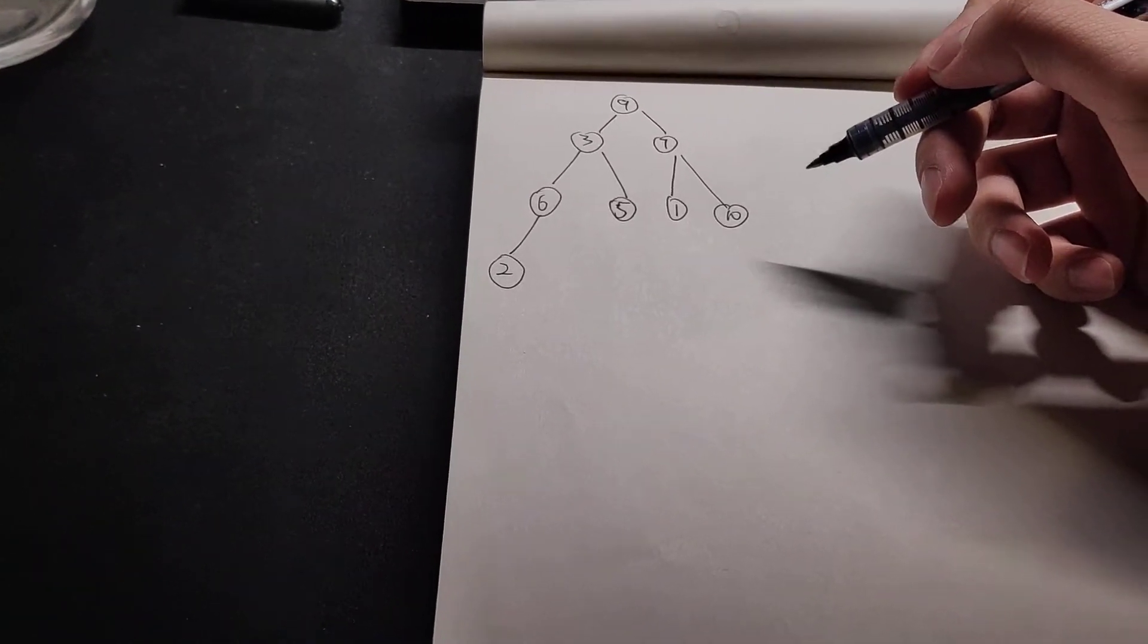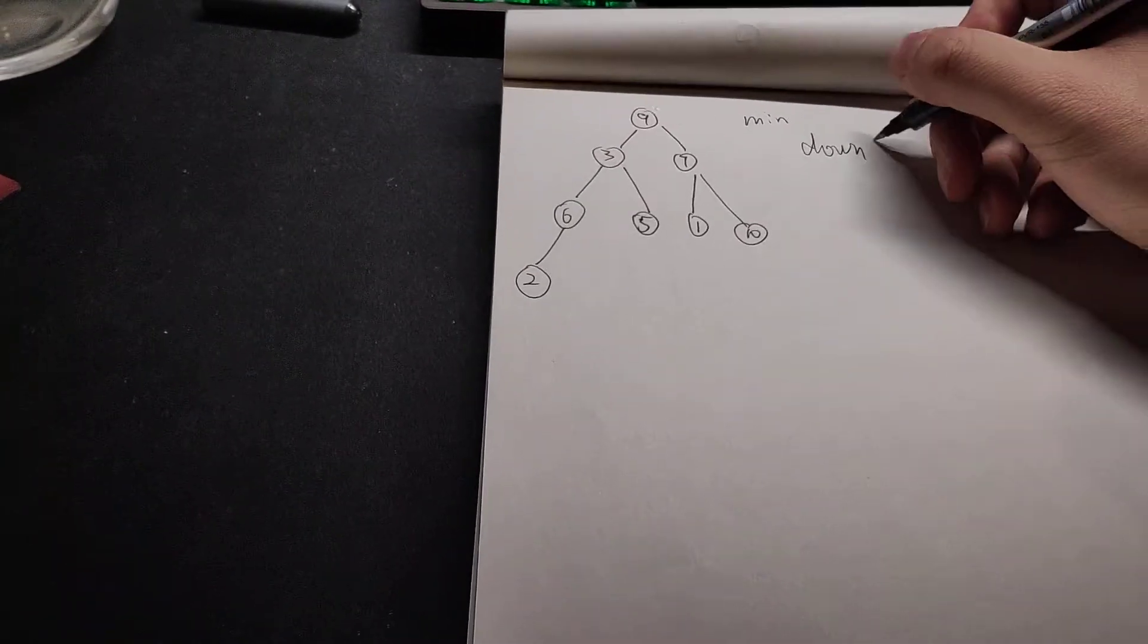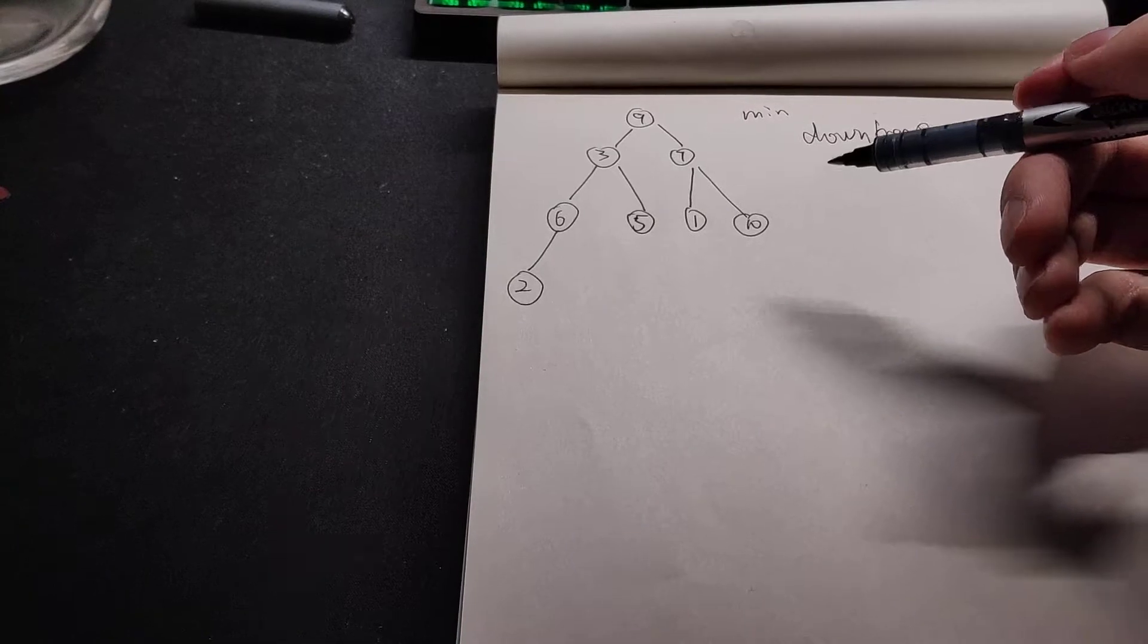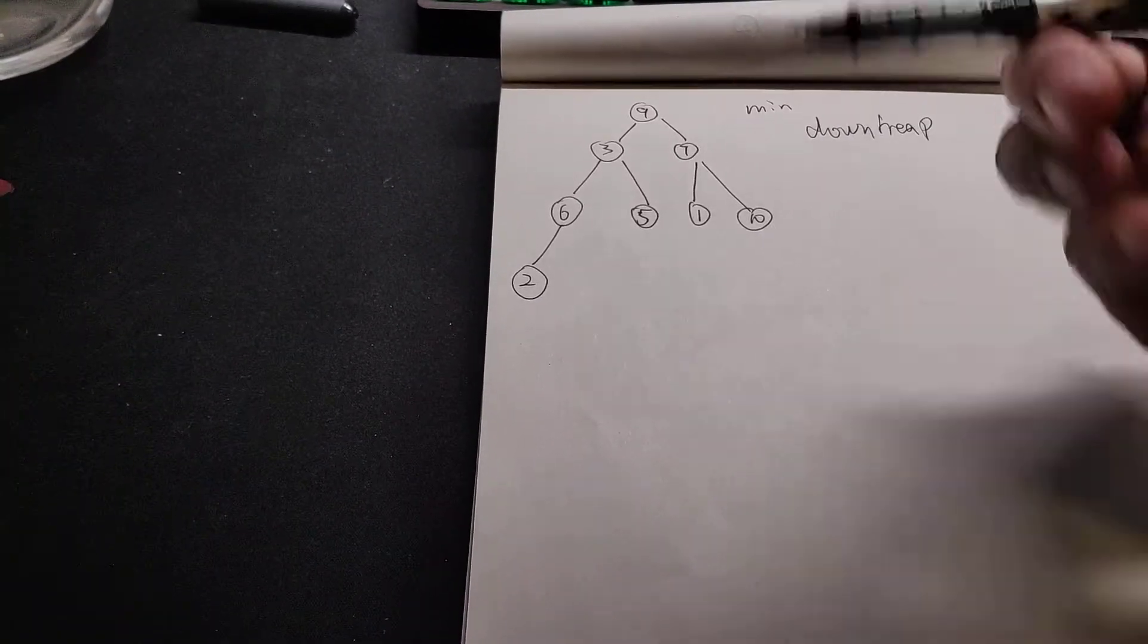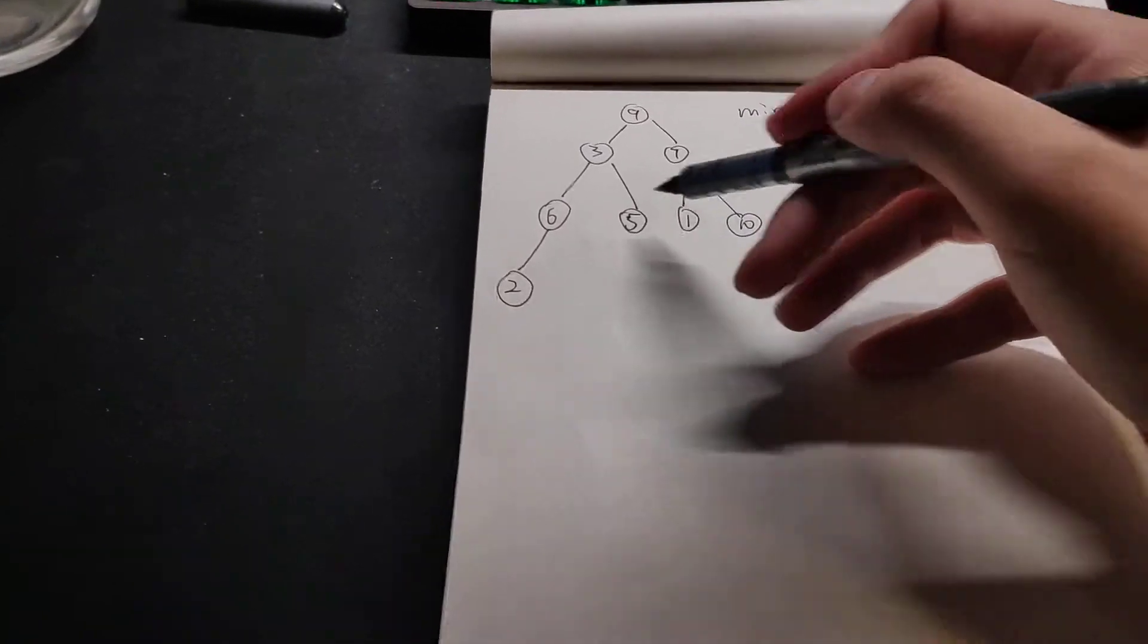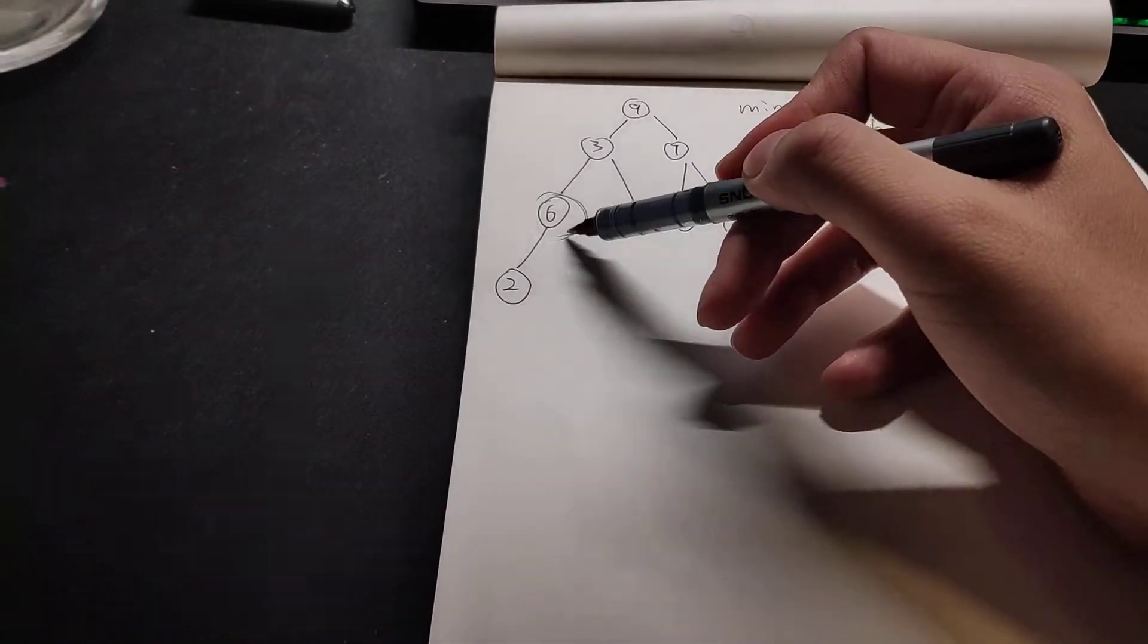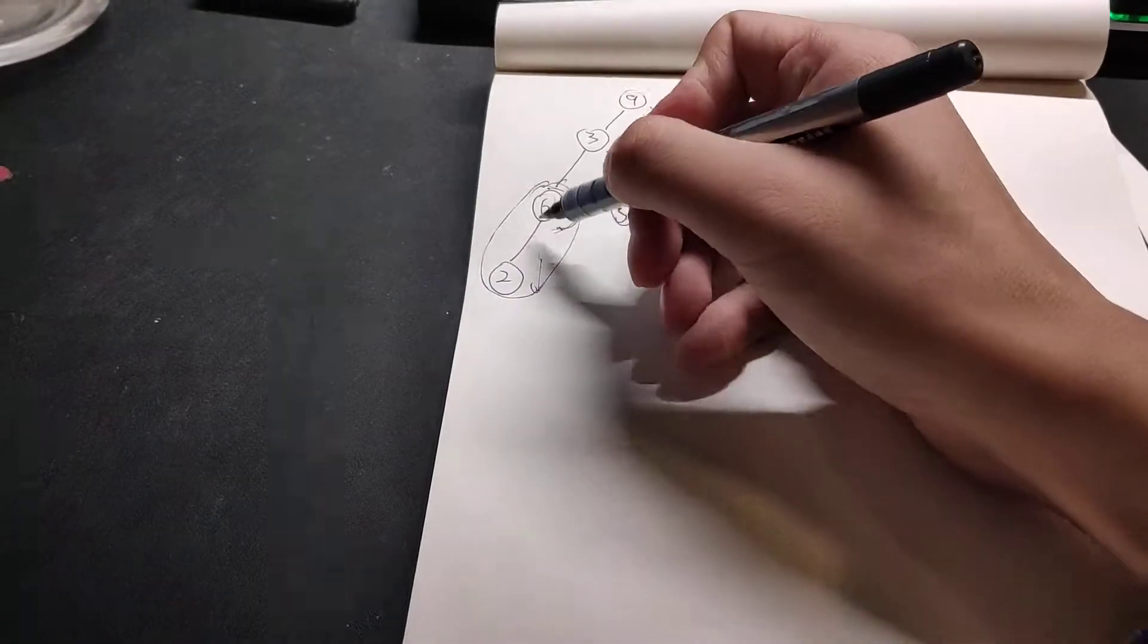Then when we do the downheap, we will check from the second last level because the last level cannot go down forever. So there is only one element that has the lower level of the last level.